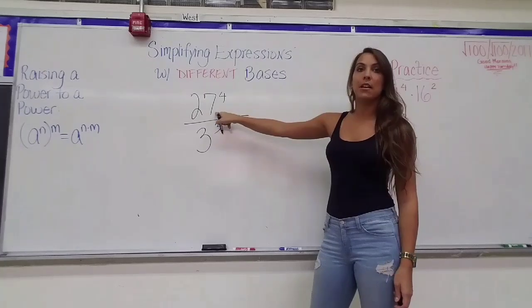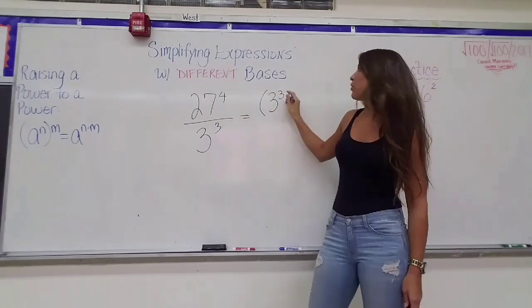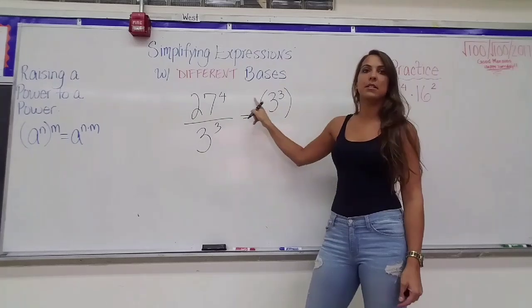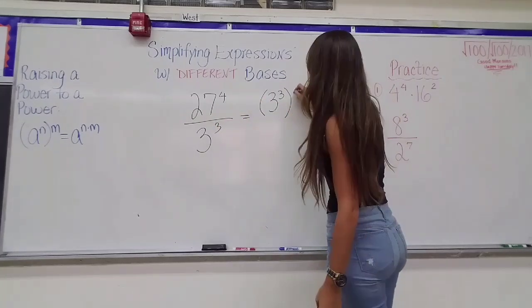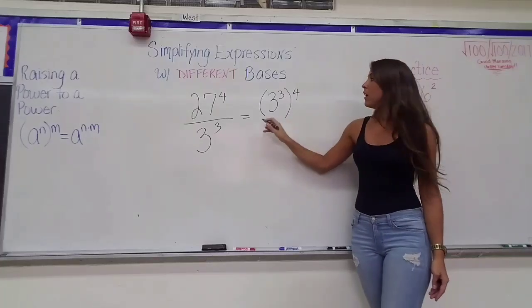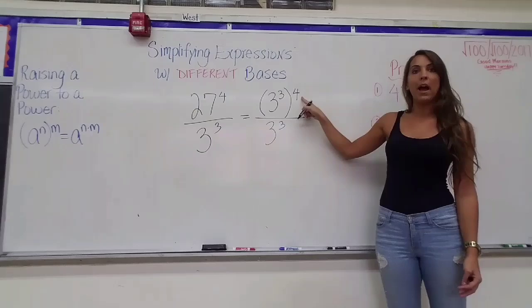So that means that instead of writing 27, because it's equivalent, I can write down 3 cubed. 3 cubed and 27 are the same thing, so I can replace one with the other. Now I can't forget about this 4, so I'm going to bring that 4 over here. I'm going to bring over my denominator of 3 cubed, and now again I have a power being raised to another power.